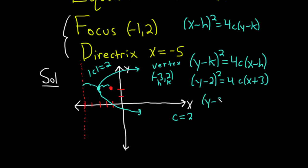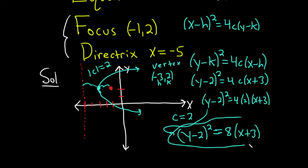So this becomes y minus 2 squared equals 4 times 2 times x plus 3, just replacing the c there with 2. And so the final answer would be y minus 2 squared equals 8 times x plus 3. That would be the final answer.